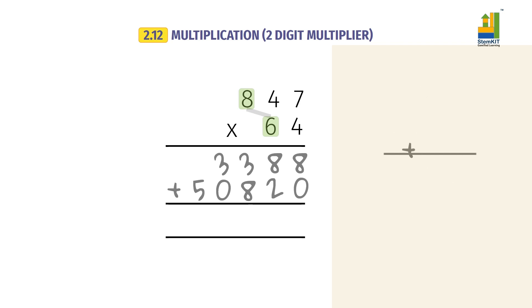Add the two rows. And we get the product. 5-4-2-0-8. Now you know how to multiply with two-digit numbers.